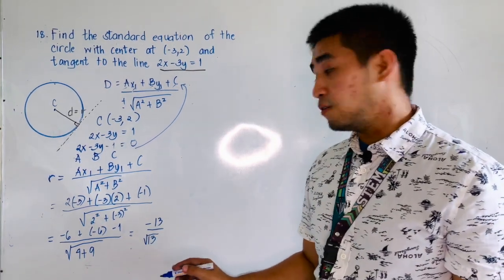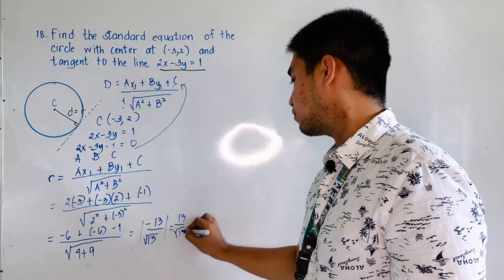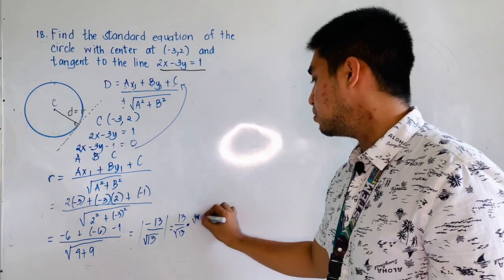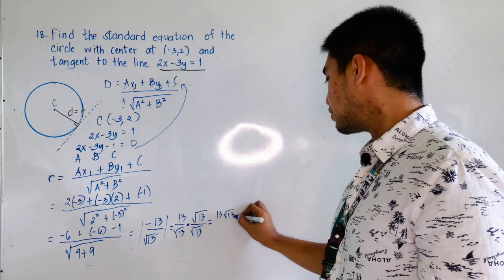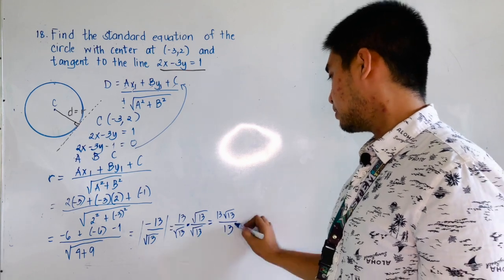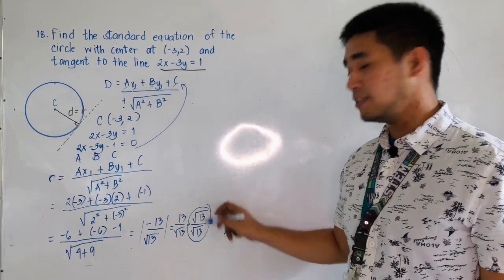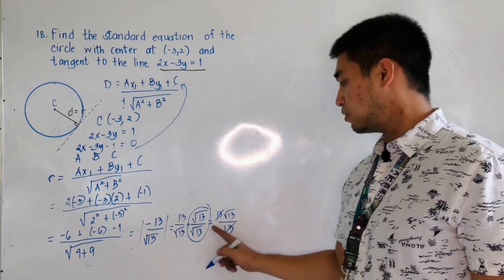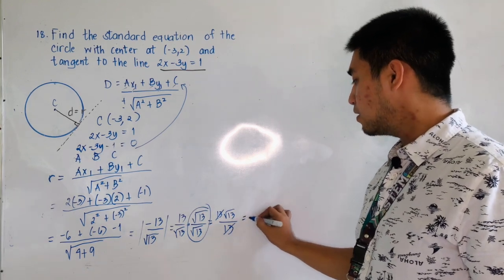Since we have a negative value, we take its absolute value, giving 13 over the square root of 13. This is not yet rationalized, so we multiply by the square root of 13 over the square root of 13. That gives 13 times the square root of 13, all over 13. The 13s cancel, leaving the square root of 13.